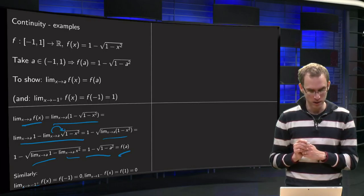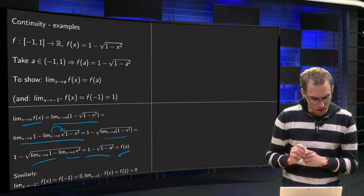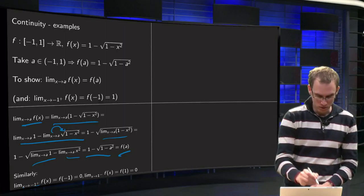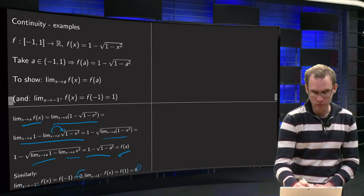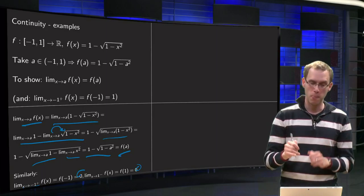And then, of course, that is one of the boundary points. So if x approaches minus 1 from above, then we have to show that it equals the f of minus 1.